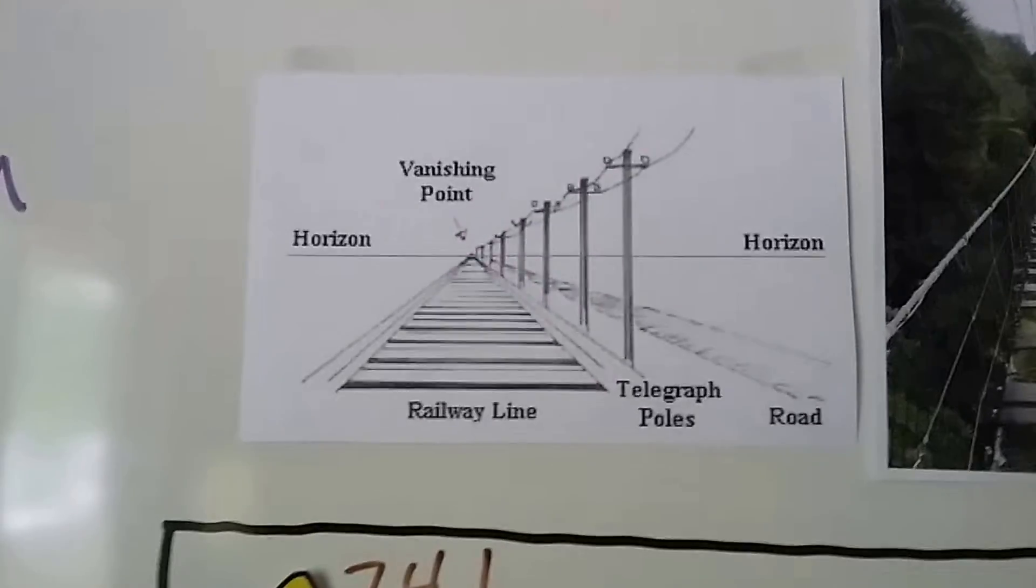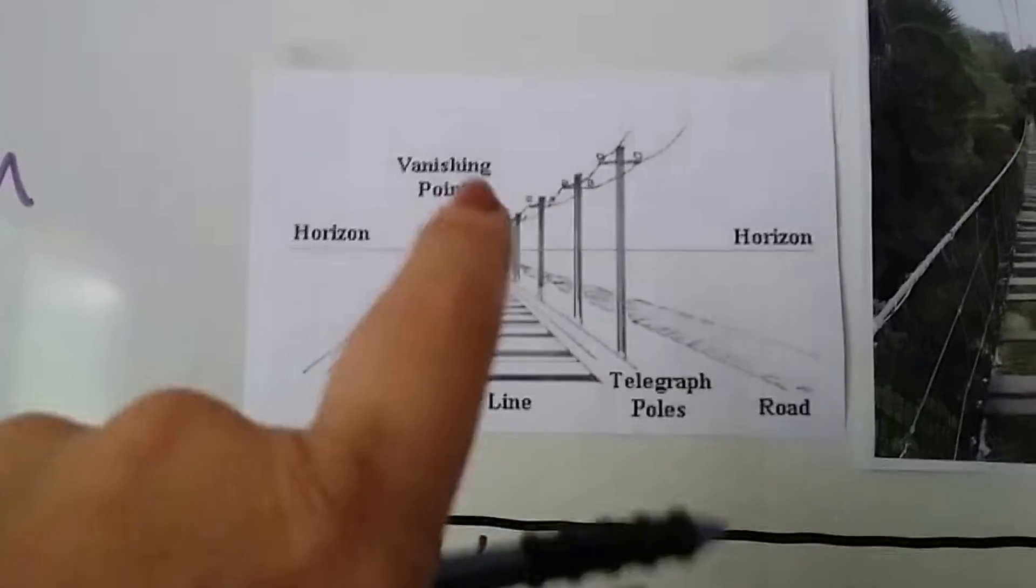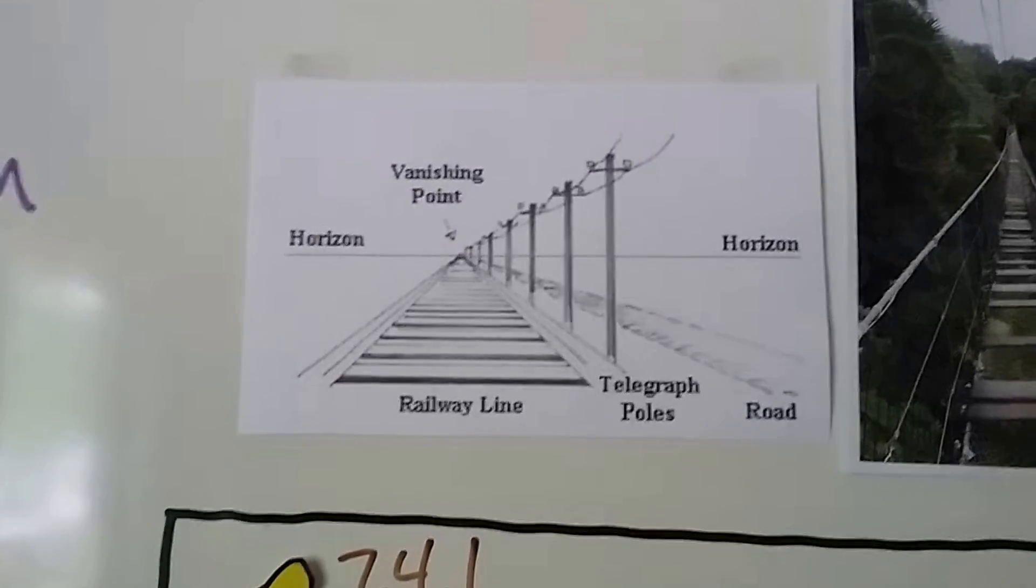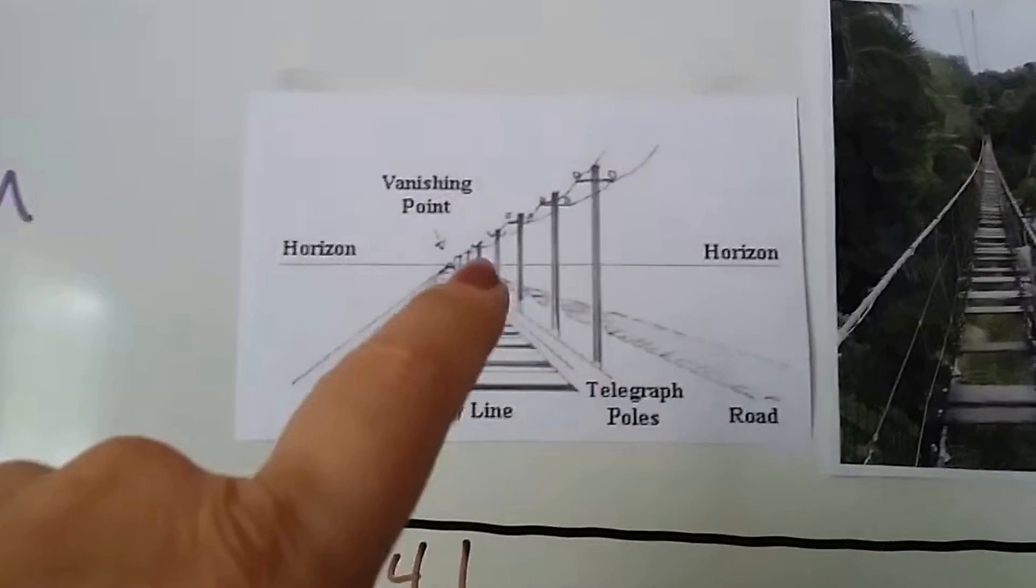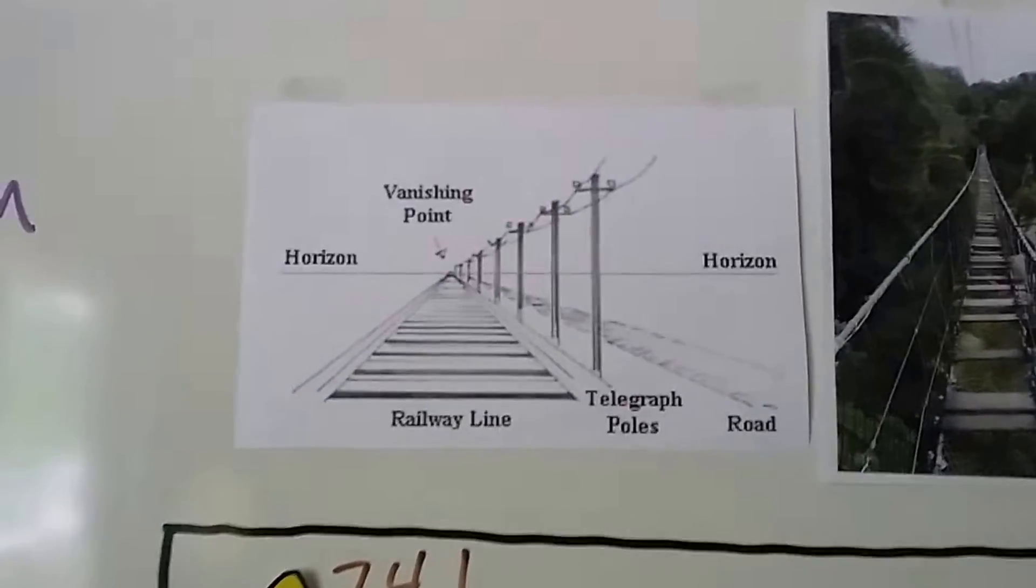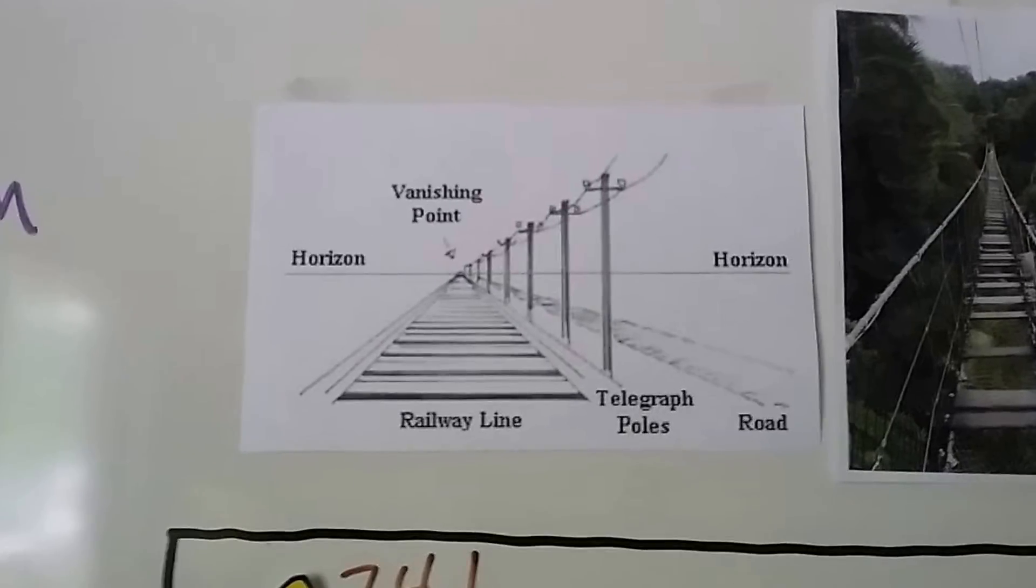And we know railway lines are parallel to each other, but these are forming a triangle. And these telegraph poles are getting smaller as they reach that vanishing point. That's perspective.